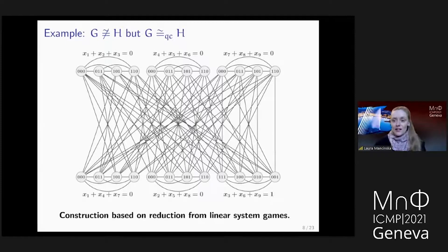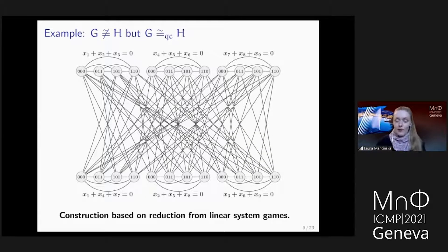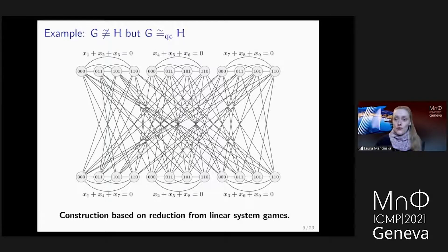Is this quantum isomorphism really a different relation on graphs from usual graph isomorphism? Since I'm giving this talk, the answer is yes, it is — although it's not easy to find pairs of different graphs. So non-isomorphic graphs that are nevertheless quantum isomorphic: here I have an example of two such graphs. It's actually the smallest example we know, and it comes from a general construction which proceeds by a reduction from another class of non-local games called linear system games.